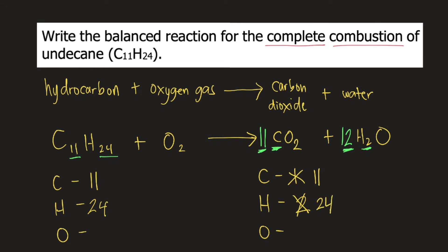Finally, oxygen. On the left side we have 2. On the right side we have 11 times 2, which is 22, plus 12 times 1, which is 12. 22 plus 12 equals 34. To balance oxygen, we put the coefficient 17 on oxygen gas, because 17 times 2 equals 34.